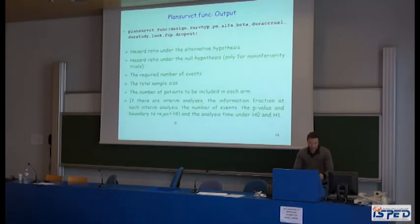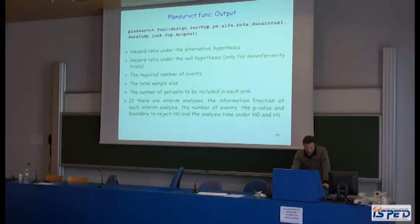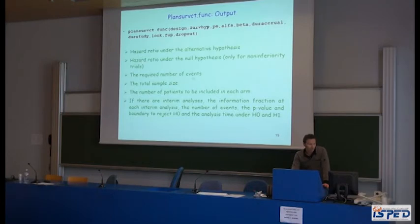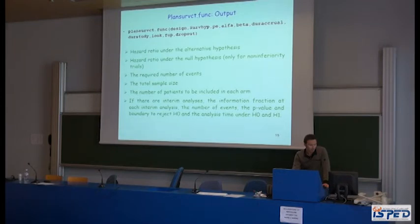The first part of the program performs checks on parameters and signals incoherent values. Secondly, the program lists all input parameters. Then the program displays the following: the hazard ratio under the alternative hypothesis; the hazard ratio under the null hypothesis for non-inferiority and equivalence designs; the required number of events; the total sample size; the number of patients in each arm; and if interim analyses are planned, the information fraction at each analysis, the number of events, the p-value and boundary to reject H0, and the analysis timing under H0 and the alternative hypothesis.